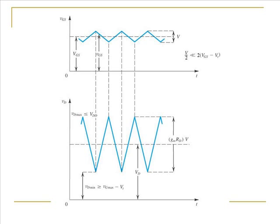For the MOSFET to remain in saturation, VDS must always be greater than VGS minus VT, and the total drain-source voltage must never exceed the power supply voltage VDD, otherwise the MOSFET will go into cutoff. This also limits the transconductance we can have for a particular signal, because if the transconductance is too high it produces a higher gain and a larger drain voltage swing, which may push the MOSFET out of the saturation region.